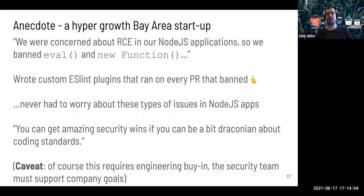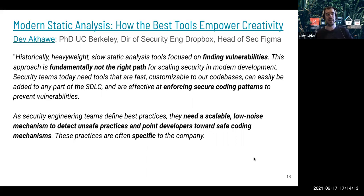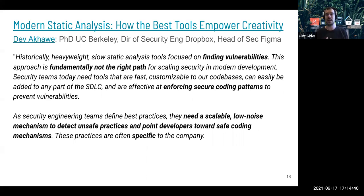A recent blog post by Dev — formerly a grad student at Berkeley, used to be director of security engineering at Dropbox, now head of security at Figma — sums up what I believe and what I've been seeing: these historical heavyweight, slow tools focused on finding vulnerabilities is just fundamentally not the right path in modern development. We need tools that can easily fit anywhere and are effective at enforcing secure code standards to prevent vulnerabilities from happening in the first place. We want scalable, low-noise ways to detect unsafe things — like not even asking 'is this a vulnerability,' just 'is this an unparameterized SQL query.' Always parameterize SQL queries and then we don't have to worry about it.